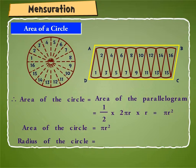And radius of the circle is equal to square root of area divided by π.